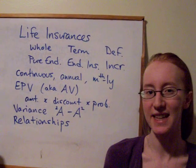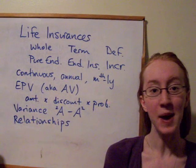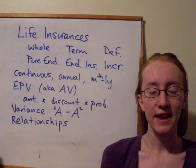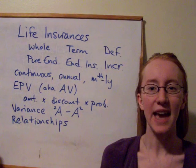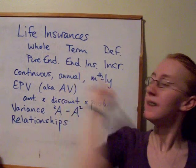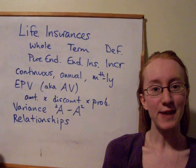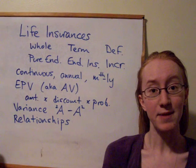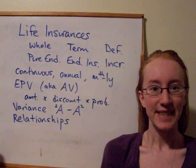We proved the continuous relationship in class, and the m-thly one was left as an exercise. These relationships mean that if we know the annual present values, we can get any result for any payment timing and any of these insurance contracts. We will get lots of chances to practice during the tutorial and on the assignment. See you on Monday, and goodnight!